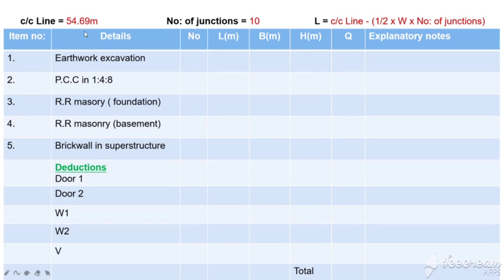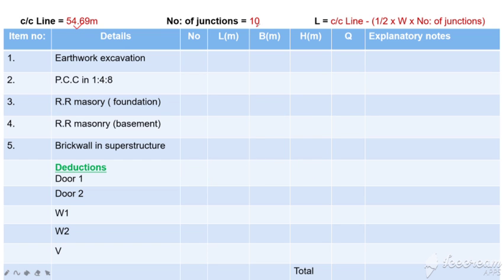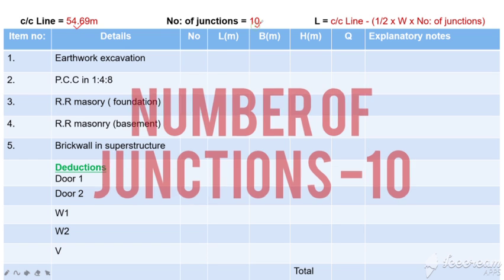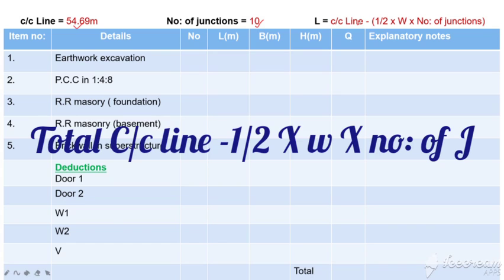To estimate the length, we have to calculate all the details in the middle. The centerline length is 54.69. The number of junctions is 10. If we calculate the length using the formula: total centerline minus half width into number of junctions.